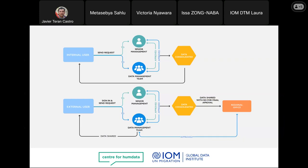In terms of data sharing: once we receive a data request — whether internal or external through the DTM mailing list — the request goes to the data management team or through DTM senior management. Once approved, we consolidate the data and share it with the internal user. When it comes to external users, once we consolidate the data, we seek approval from the regional offices. Once approved and validated, we proceed and share the data with the external user.